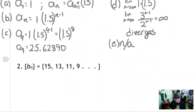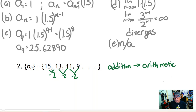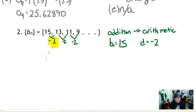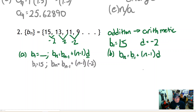Now we'll do the same thing with a new sequence: 15, 13, 11, and 9. We notice the rule to get from one term to the next is subtract 2, or add negative 2. Since the rule is addition, this is an arithmetic sequence where b_1 equals 15 and d equals negative 2. The recursive rule has two components: b_1 is 15, and the nth term equals the (n−1) term plus negative 2.